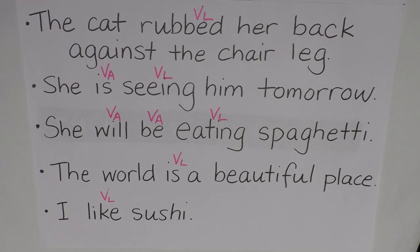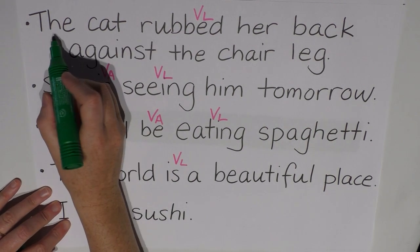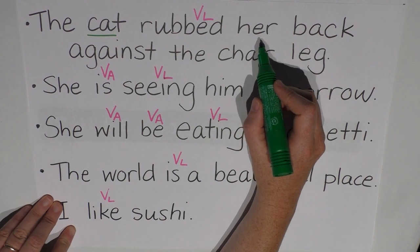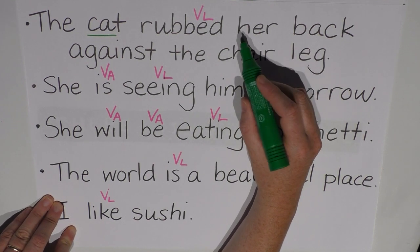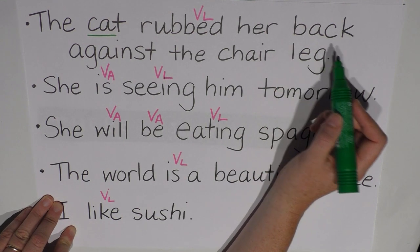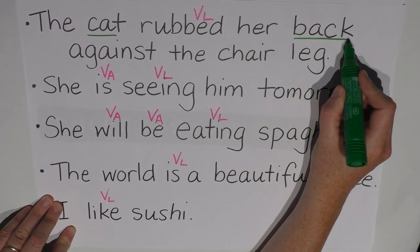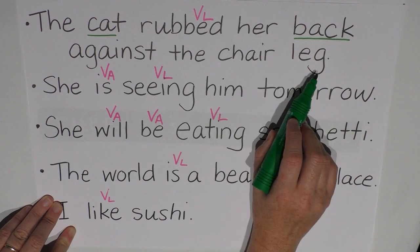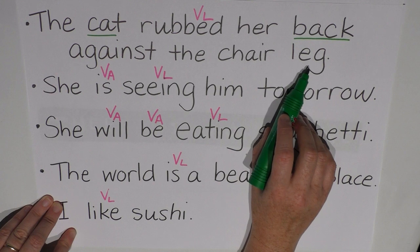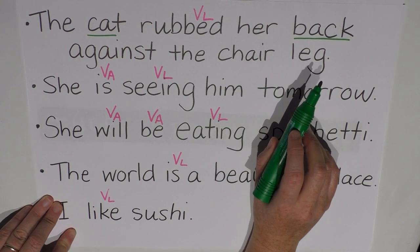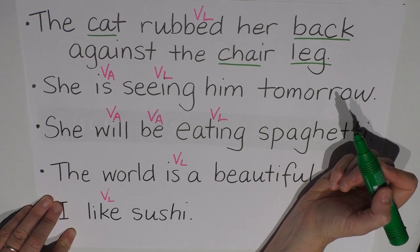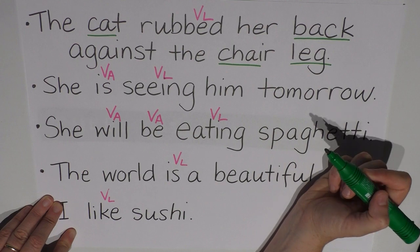Now I said I would go through the pronouns and nouns for those who jumped ahead. So: 'cat' is a noun — it's preceded by 'the'. 'Her back' — 'her' here is not a pronoun, because it's not standing instead of a noun phrase. It's coming before 'back', so it's actually a determiner. 'Chair leg' — I can say one chair, two chairs, and one leg, two legs — so I think this is a noun modifying another noun. Both are nouns. There are no pronouns in the sentence: the cat rubbed her back against the chair leg.